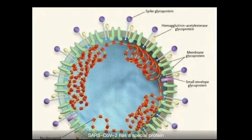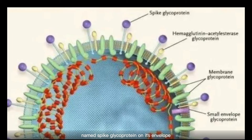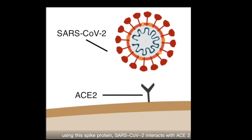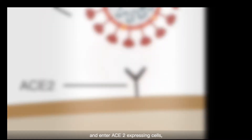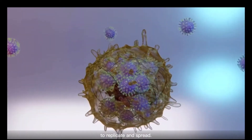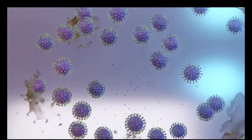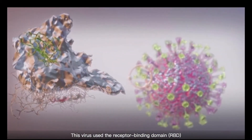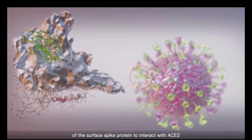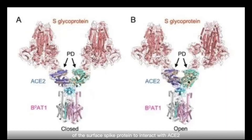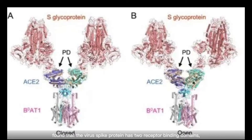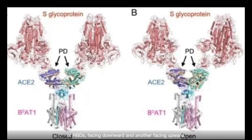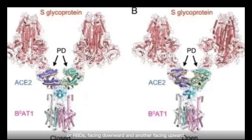SARS-CoV-2 takes advantage of this to enter our cells. SARS-CoV-2 has a special protein named spike glycoprotein on its envelope. Using this spike protein, SARS-CoV-2 interacts with ACE2 and enters ACE2-expressing cells, such as mucous membrane cells, to replicate and spread. The virus uses the receptor binding domain (RBD) of the surface spike protein to interact with ACE2. A study published in Science found that the virus spike protein has two receptor binding domains: one facing downward and another facing upward.